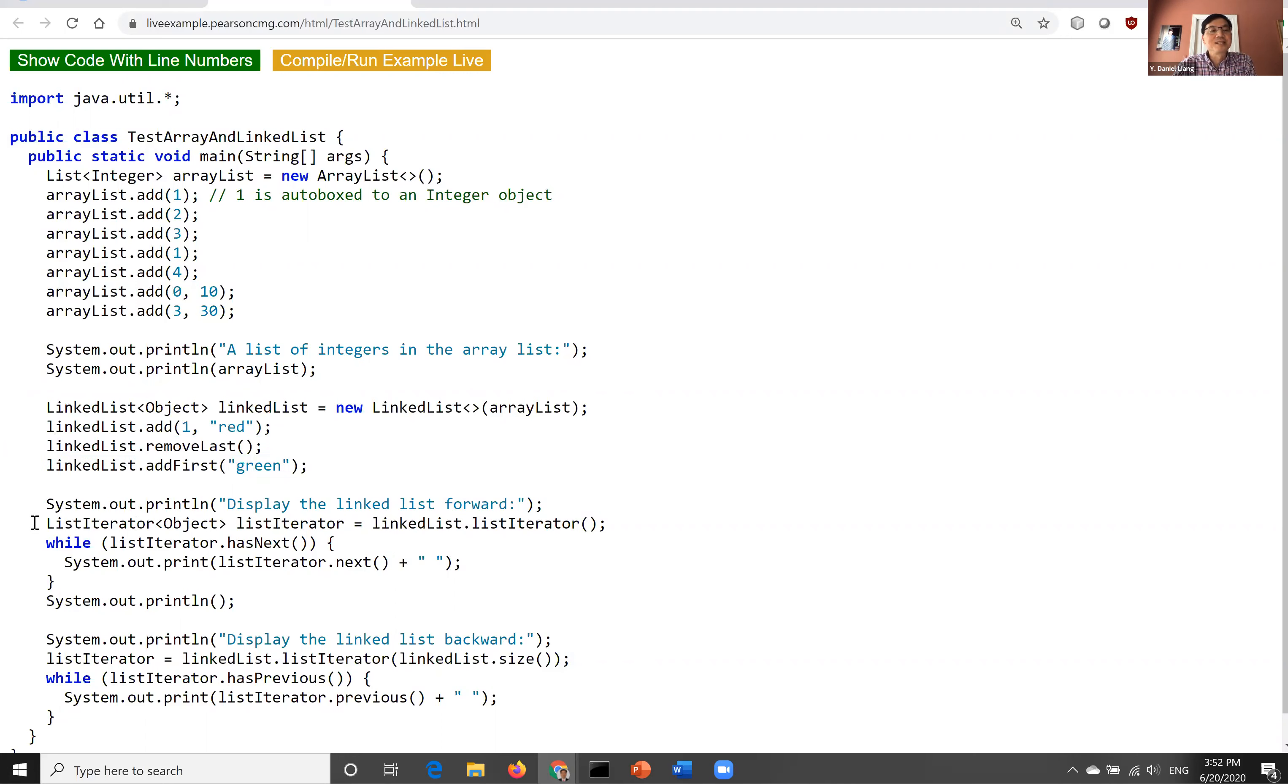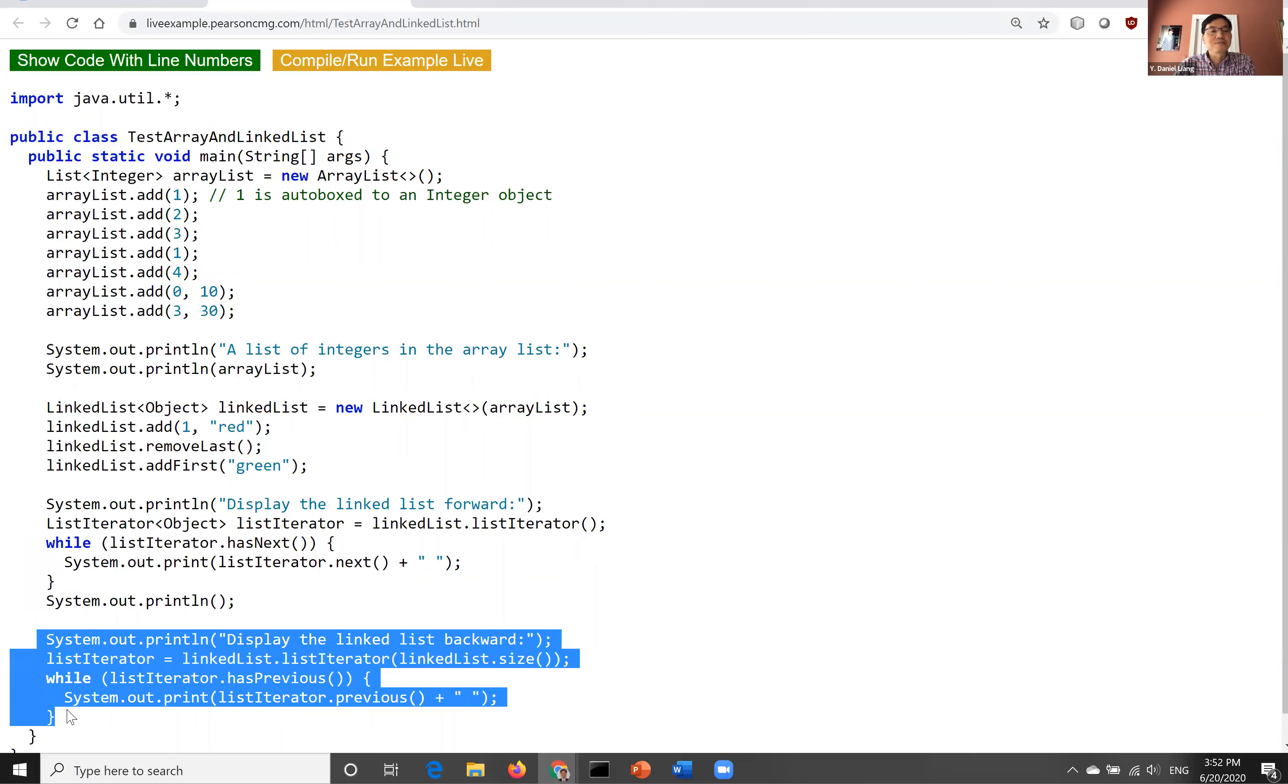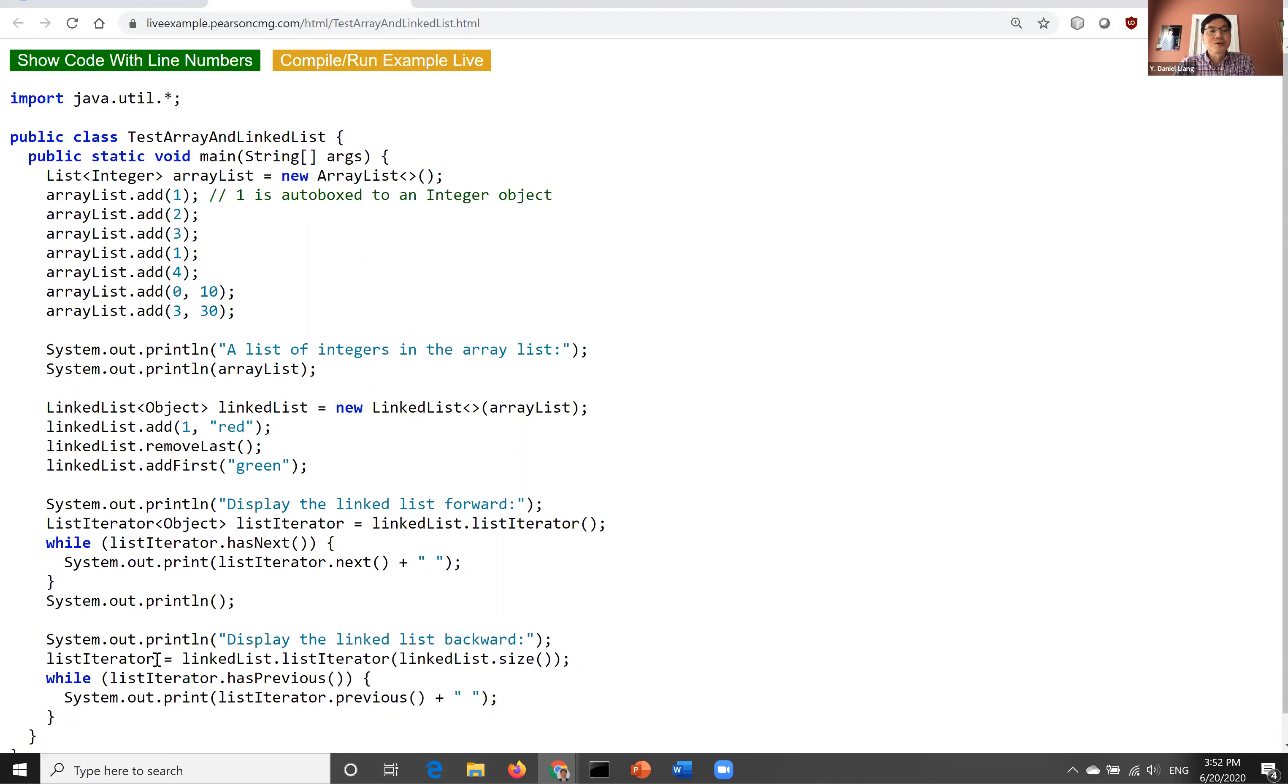And this is to use the list iterator, going forward through the sequence using the iterator. And you can go backward. So get the iterator, and the location is from the last one, and then you go to previous, previous, previous, all the way to the very beginning.